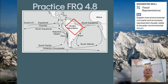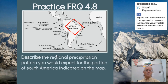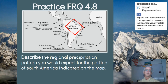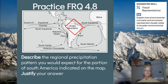FRQ 4.8: Describe the regional precipitation pattern you would expect for the portion of South America indicated on the map. Justify your answer. Thank you, and have a great day.